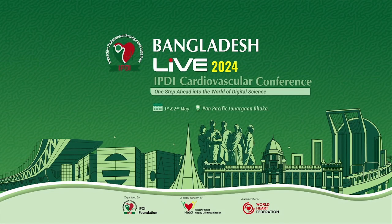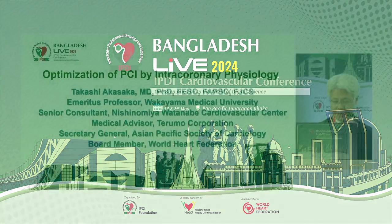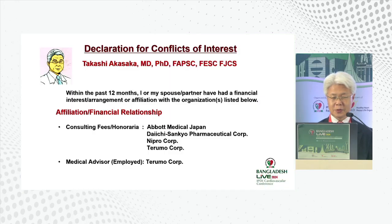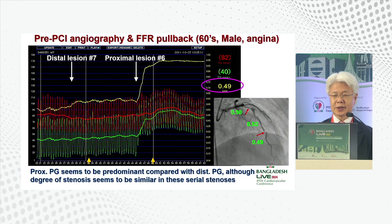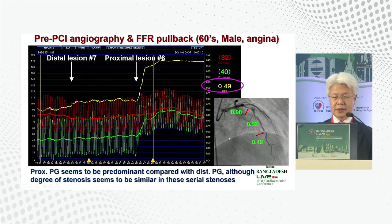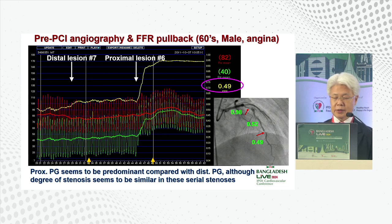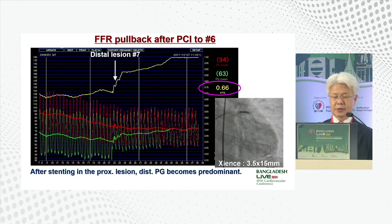This talk covers optimization of PCI by intracoronary physiology. The first case is a 60-year-old male with angina. You can identify two regions: a proximal and distal tight stenosis. On FFR pullback, the proximal pressure gradient appears predominant compared with the distal gradient, although the degree of stenosis seems similar in this serial stenosis. Based on the PPG index, we treat the bigger pressure gradient first.